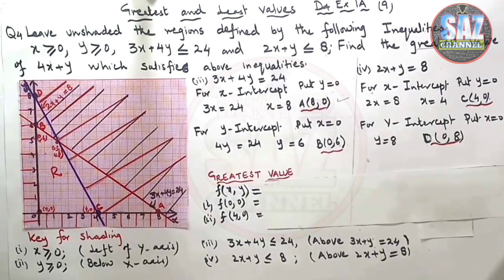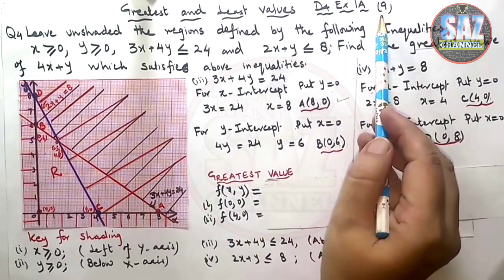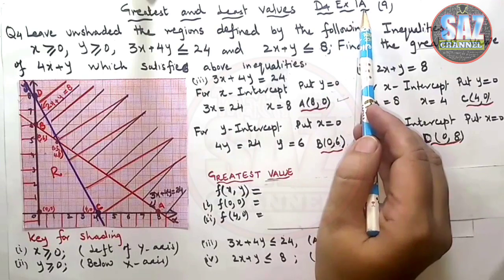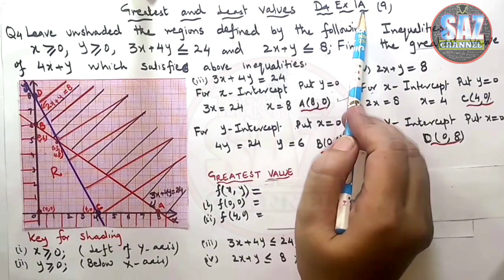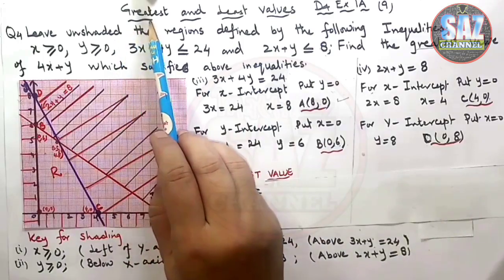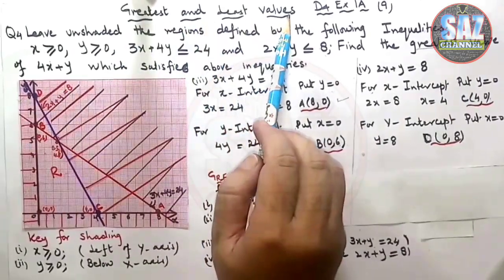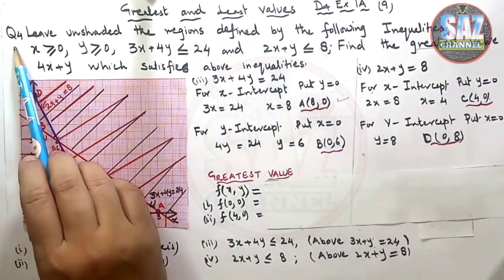Hello and welcome to Maths by Saas, this is my 9th lesson of D4 Exercise 4A Linear Inequalities in two variables. In this lesson, we will be discussing the greatest and least values of function. Let's move to question number 4.